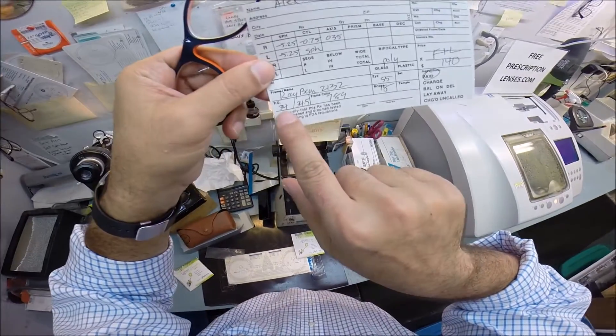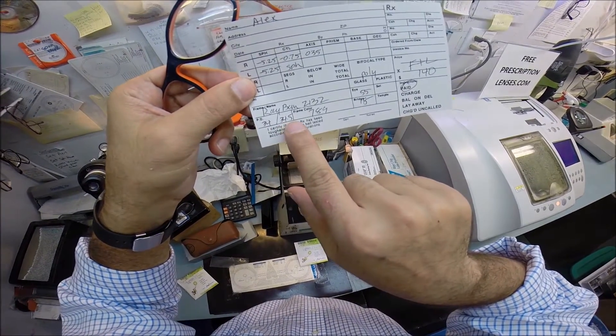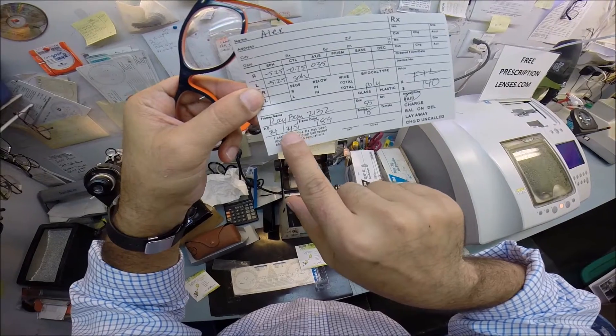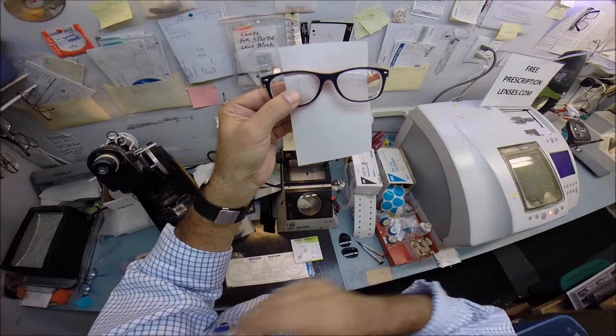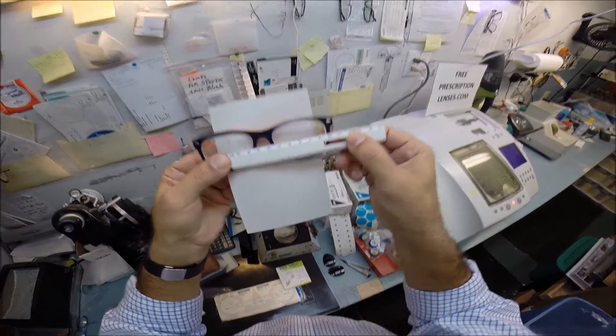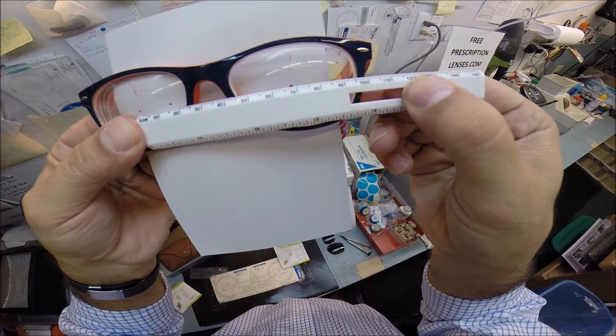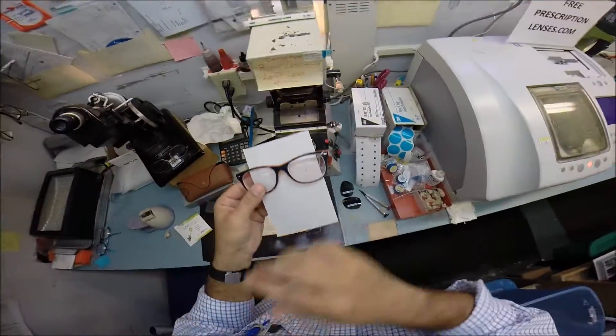Your pupillary distance is 34 for your right eye, 34.5 for the left, or a combined measurement of 68.5. I'm going to turn that over. I'm going to put my thumb on the right lens, on the zero. I'm going to hold it up to the left lens. We're getting 68.5. So, that is cut perfectly.